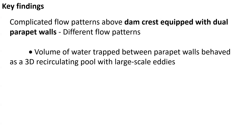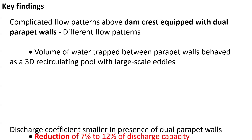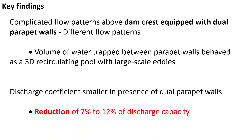The key finding highlighted the complicated flow patterns above dam crest equipped with dual parapet walls. In particular, the volume of water trapped between the parapet walls behaves as a three-dimensional recirculation pool with large scale vortices. Further, the discharge coefficient was smaller in presence of dual parapet walls, with a reduction on average of 7 to 12% in discharge capacity.